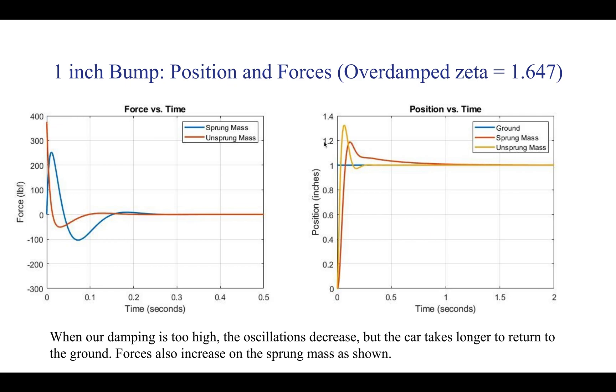Then we have the overdamped case. You can see that similarly there's basically similar forces acting on the system, but you can see the oscillations decrease. However, you can see how much longer it takes for our sprung mass to return to the ground. There's going to be a lot of time taken before the suspension actually fully absorbs the impact of hitting this bump. This is what you want to avoid typically. You actually want your zeta value to be slightly below one. You want to allow a little bit of flexibility in the suspension so it's able to bounce and not cause too harsh of an impact.